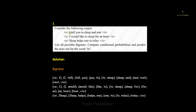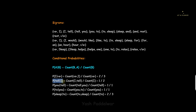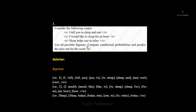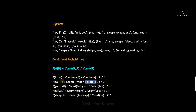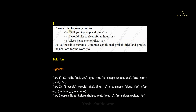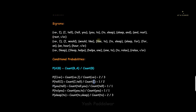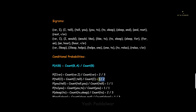Next we find the conditional probability for the pair 'I' and 'tell'. It would be the probability of 'tell' given that 'I' has already occurred. We find the count of 'I tell' together in the corpus — 'I tell' occurs one time only. In the denominator we need the count of the word 'I' in the entire corpus. 'I' has occurred two times. So the conditional probability of this scenario is 1/2. Similarly, we calculate the conditional probability for every single bigram.